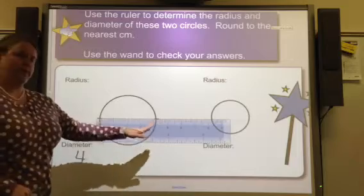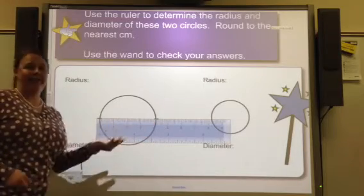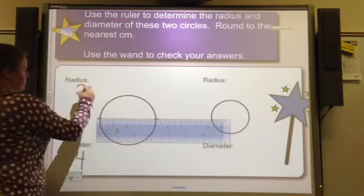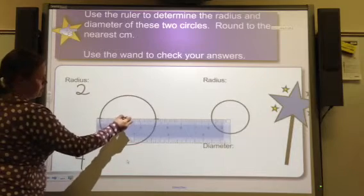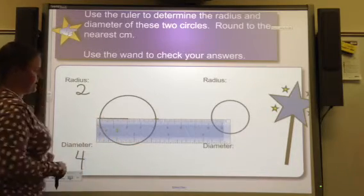So if the diameter is 4, that means the radius is half of that. The radius will be 2, because that's the radius.